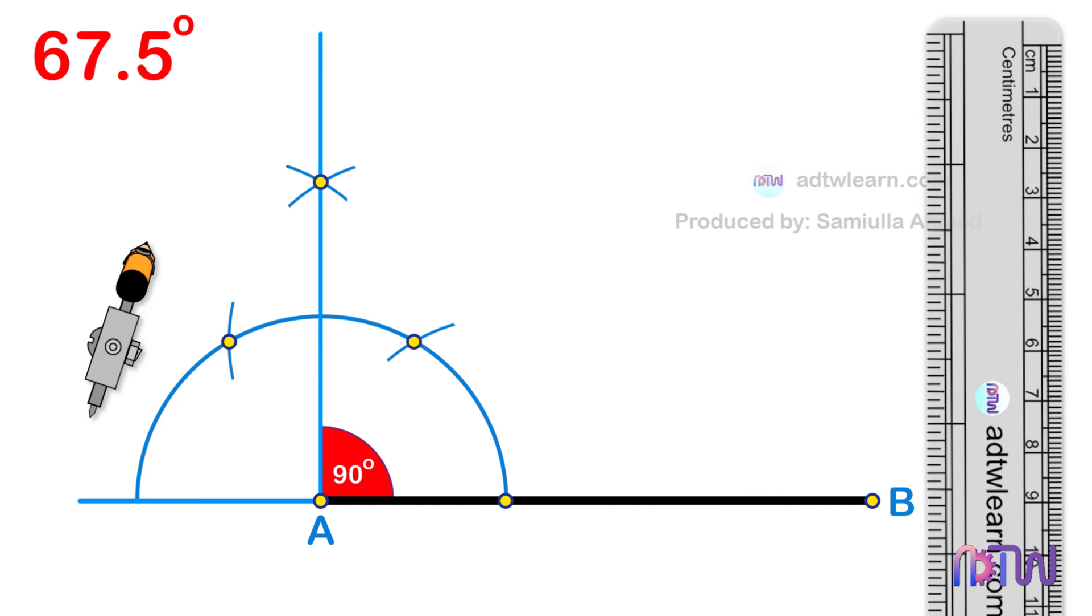To get a 135 degree angle, we need 45 degrees more from here. The angle from here to here is also 90 degrees, half of this angle will be 45 degrees.